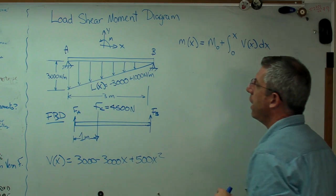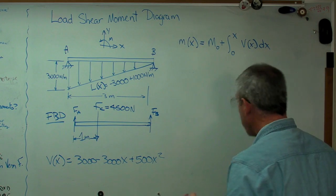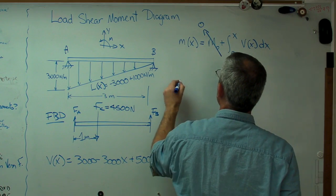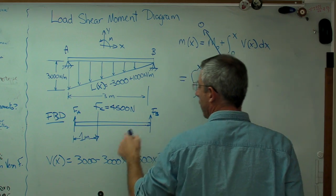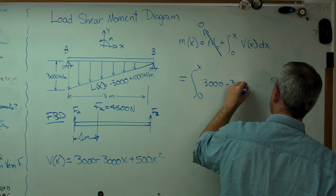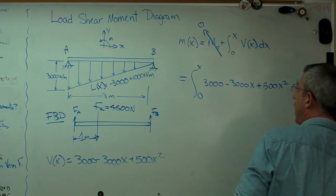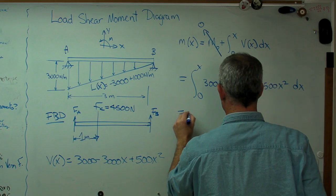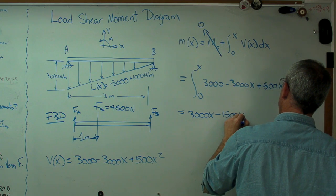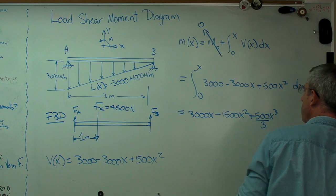Now, the nice part about this being a pin-ended beam is that the definition of pinned means there's no moment at the end. So because it's pinned, that has to go to 0. And all I need now is to integrate from 0 to x that expression right there, which is 3,000 minus 3,000x plus 500x squared dx. Again, real easy to do. So I'm going to get 3,000x minus 1,500x squared plus 500 over 3, x cubed.